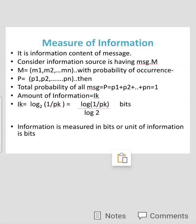In this lecture we discuss the measure of information, which is the information content of a message. Consider an information source having a message set M divided into n messages: m1, m2, up to mn, each with probability of occurrence p1, p2, up to pn respectively. The total probability of all messages satisfies p1 + p2 + ... + pn = 1, meaning the sum of all probabilities is always 1.